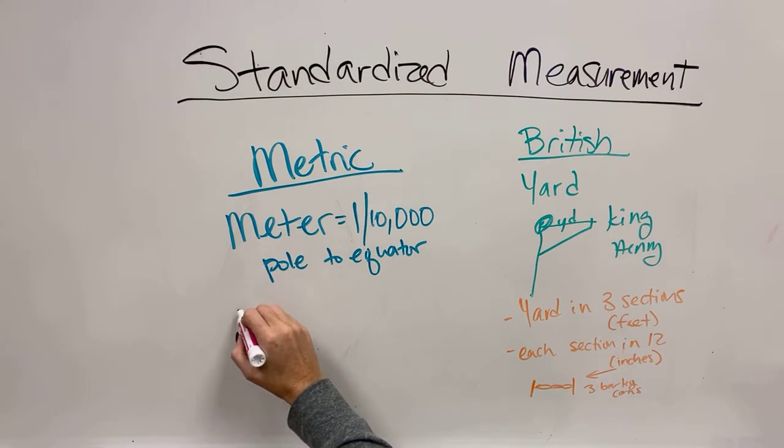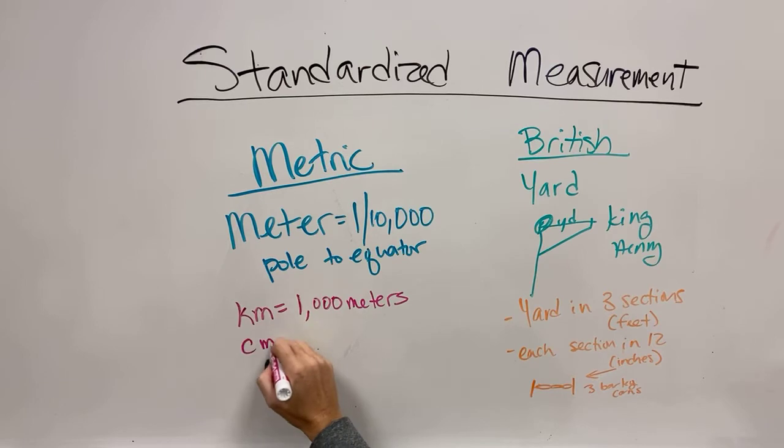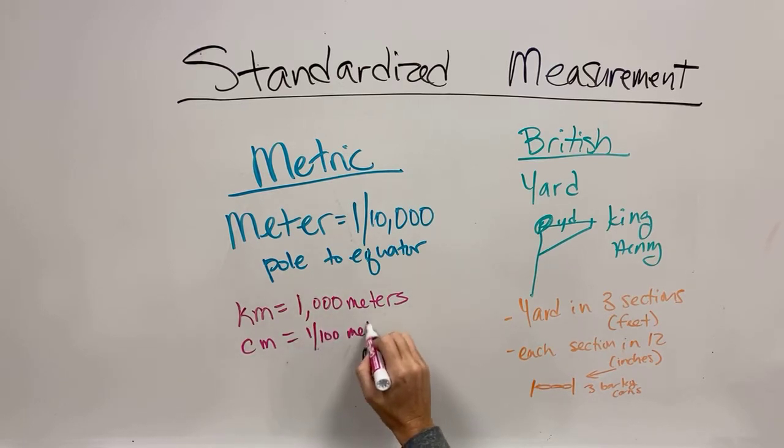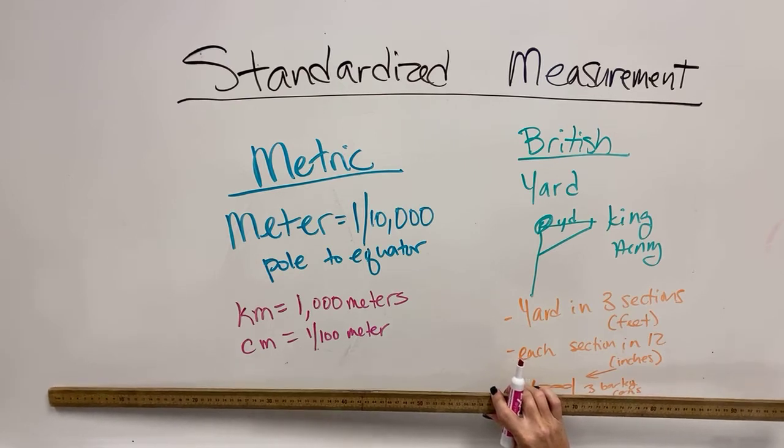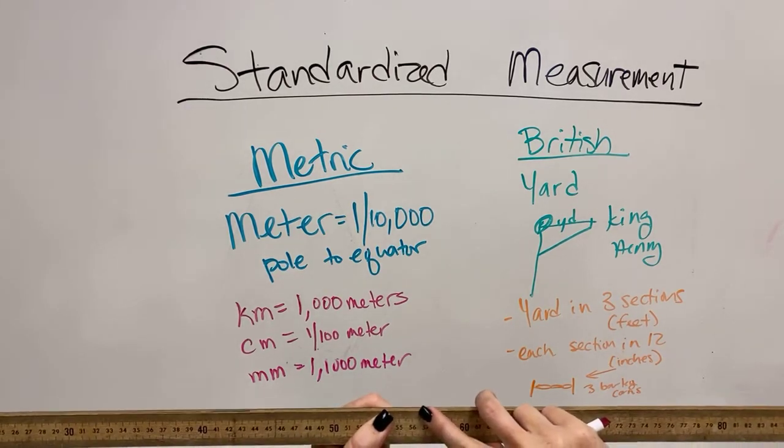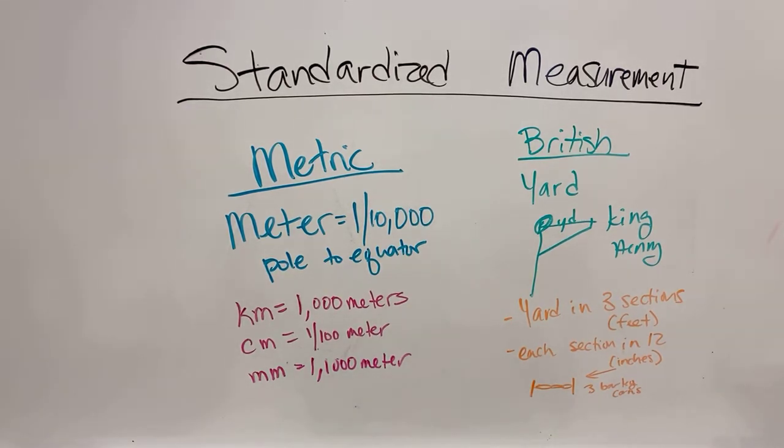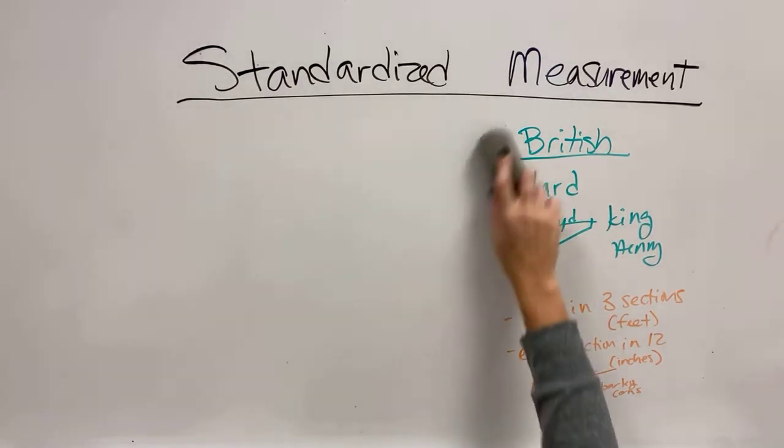Then, if we need to measure things that are really far, we're going to use kilometers, which is a thousand meters. And if we're going to talk about things that are much smaller, we can do centimeters. And there's a hundred centimeters in a meter, just like there's a hundred cents in a dollar because cent means one hundred. And millimeters, which are the teeny tiny marks on that ruler because sometimes we need to measure things that are very thin.